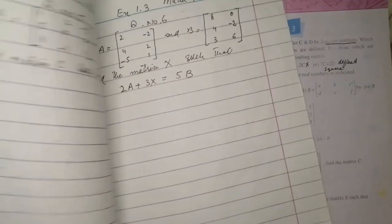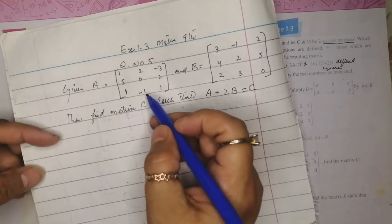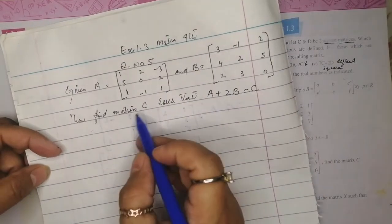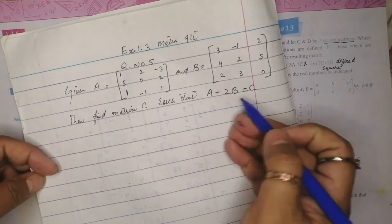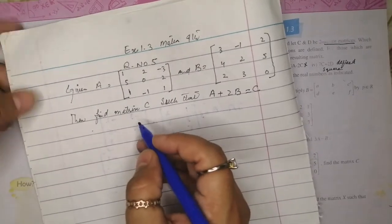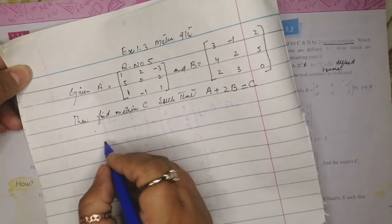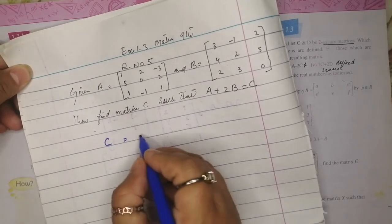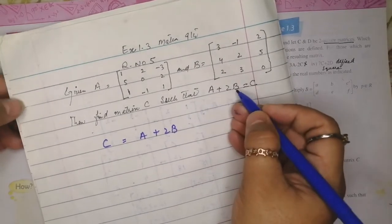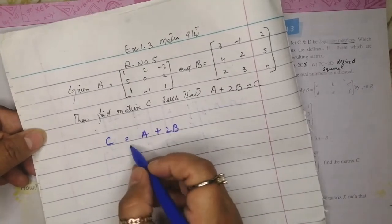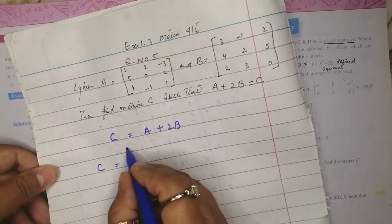Let's move to the next question. I've written: A is this matrix, B is this matrix, and we will call the resulting matrix C. C equals A plus 2B. We have to find C. C is equal to A plus 2B, so we write C equals A plus 2B.